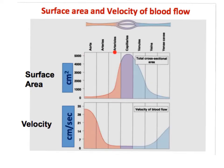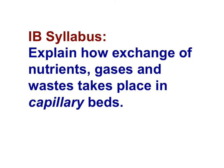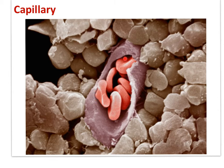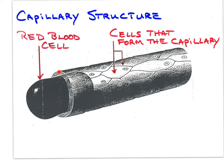In moving from the arteries to the capillaries, velocity declines and surface area increases. We need to examine capillary structure carefully to understand the function of capillaries in the exchange of nutrients, gases, and wastes. Here is the IB syllabus statement: explain how exchange of nutrients, gases, and wastes takes place in capillary beds. Capillaries provide a wonderful example of the relationship between structure and function. Here is an image of a capillary — notice its small size. Red blood cells are moving effectively in single file. In this diagram, you can see the single cell layer of the capillary quite well.